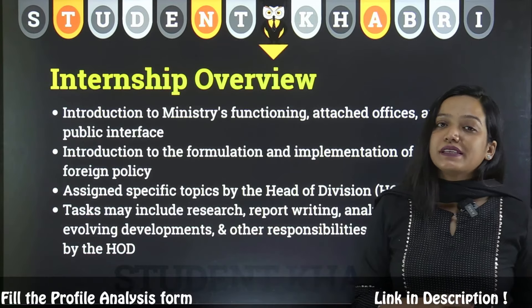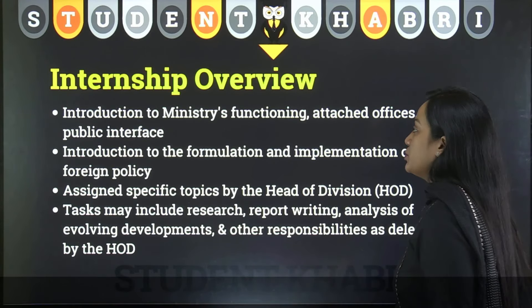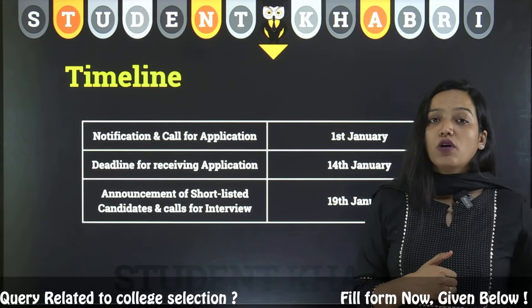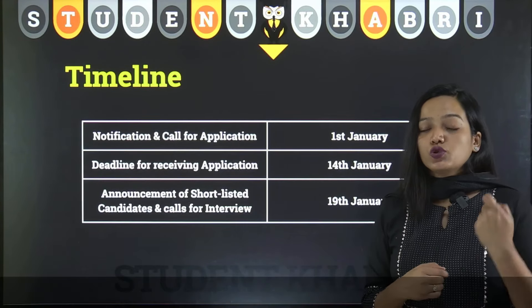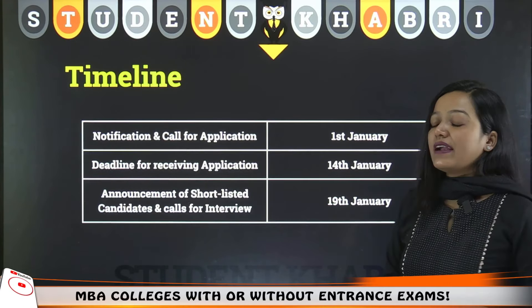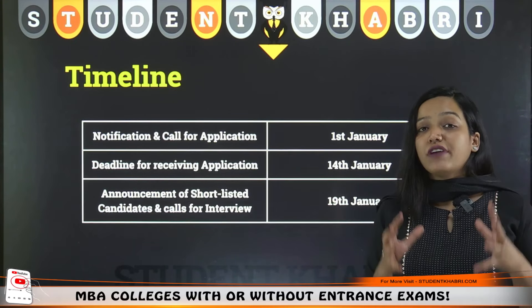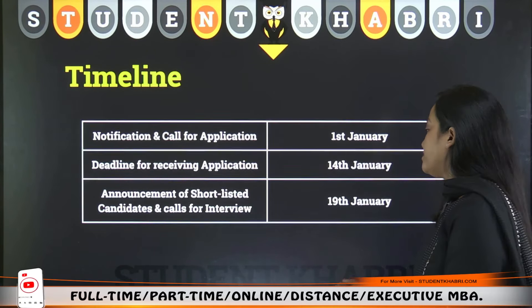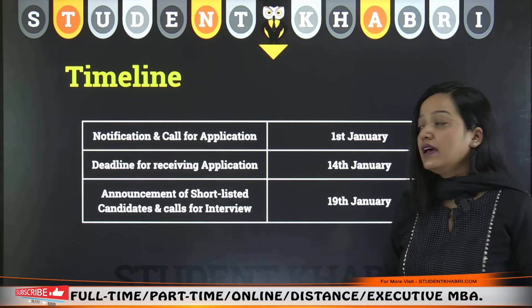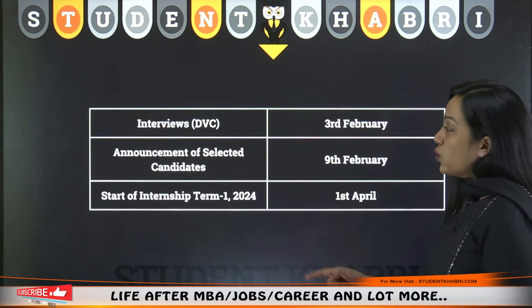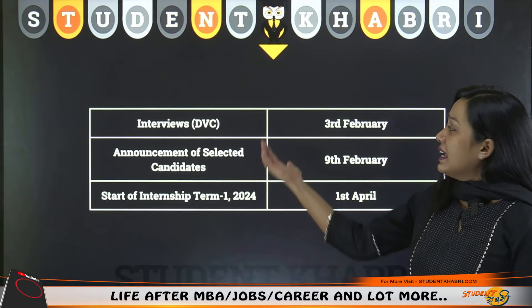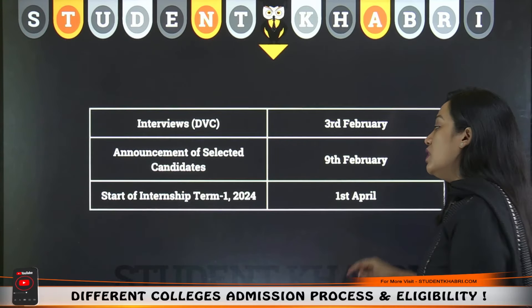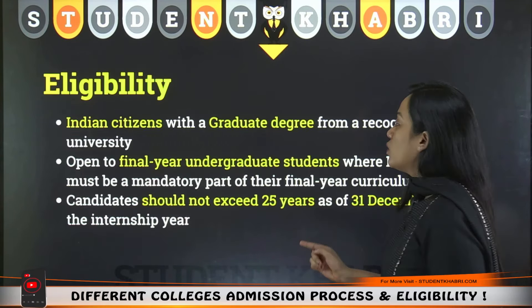Other responsibilities can be assigned by your department as well. Regarding the timeline: the notification and call for applications started from 1st January. I'm shooting this episode on 11th January; the deadline is 14th January, so you have a very small window. Shortlisted candidates will see interview results around 19th January, interviews will be held on 3rd February, and selected candidates will be announced on 9th February. The internship term starts from 1st April.